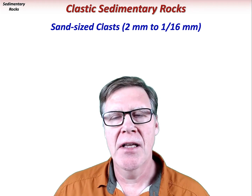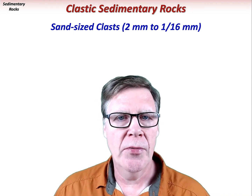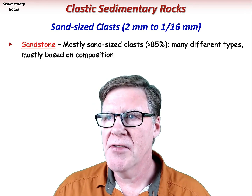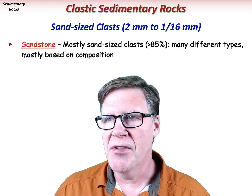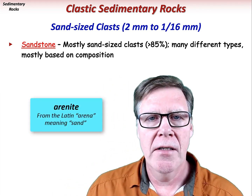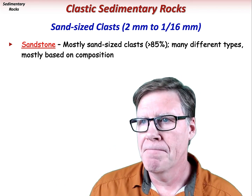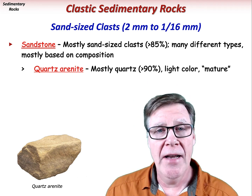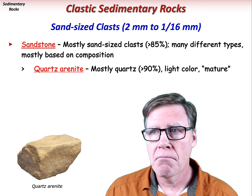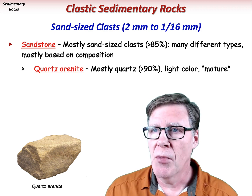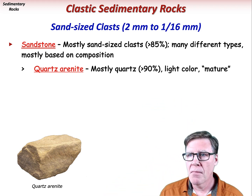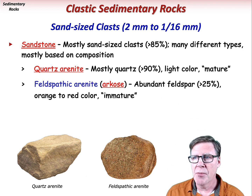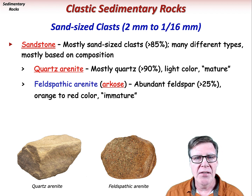Rocks with greater than 85% sand-size clasts, between 2 millimeters and 1/16th of a millimeter in size, are called sandstones, and there are many different types, typically based on composition. The term arenite is simply a generic term referring to most sandstones. Quartz arenite is a sandstone composed mostly of quartz grains — greater than 90% — and is typically light in color; this kind is compositionally mature since most other minerals have been winnowed out. A feldspathic arenite, or arkose, has abundant feldspar — greater than 25% — and is typically orange to red in color; this kind is immature due to the abundance of feldspar and other minerals, not just quartz. A greywacke has abundant mud-sized particles — between 15 and 75% — and is commonly darker in color.